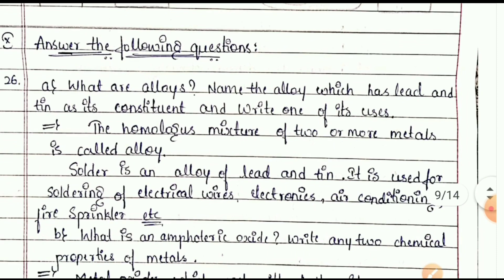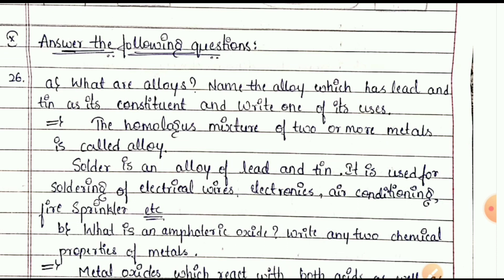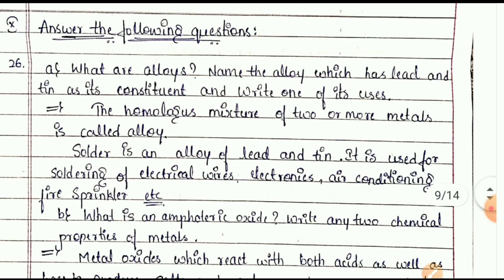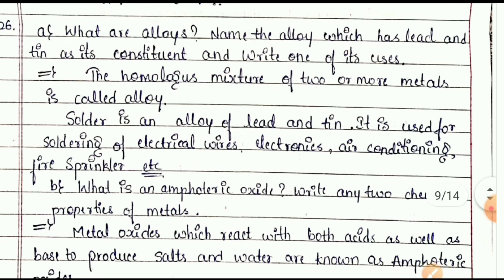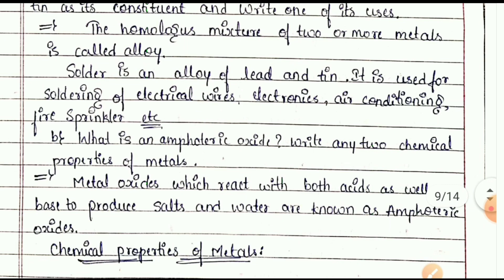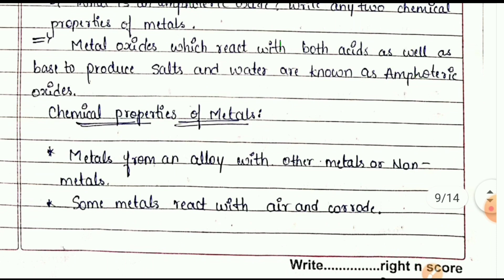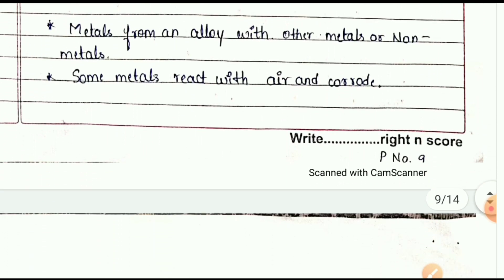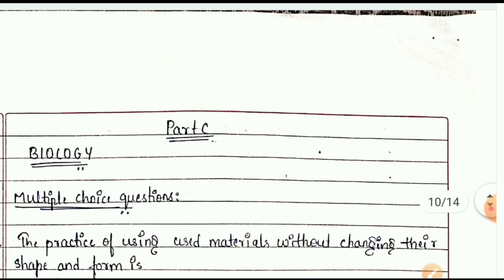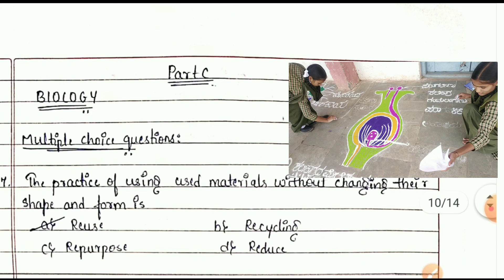Name the alloy which has lead and tin as its constituents and write one of its uses. Also, what is an amphoteric oxide? Write any two chemical properties of metals. See the correct answers shown.